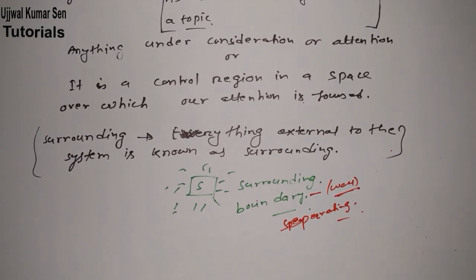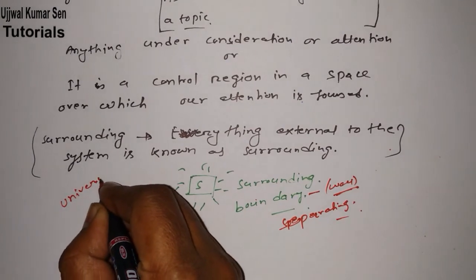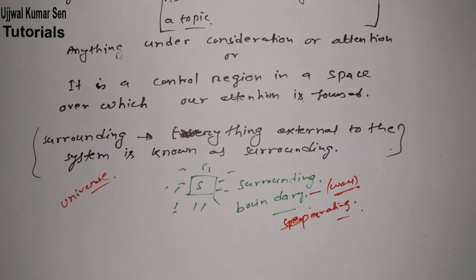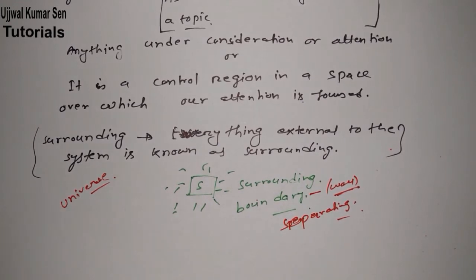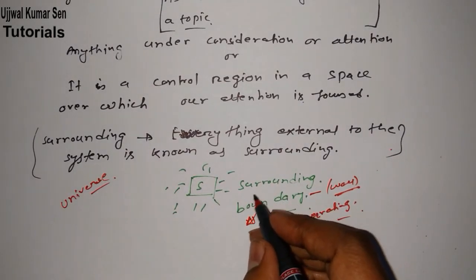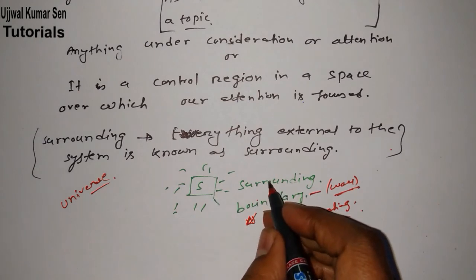The combination of system, surrounding, and boundary is known as the universe. There are many types of systems — open system, closed system, and isolated system. The universe is the best example of an isolated system. A thermos flask is also considered an isolated system, though that is a different matter. The role of boundary is to separate the system from the surrounding.